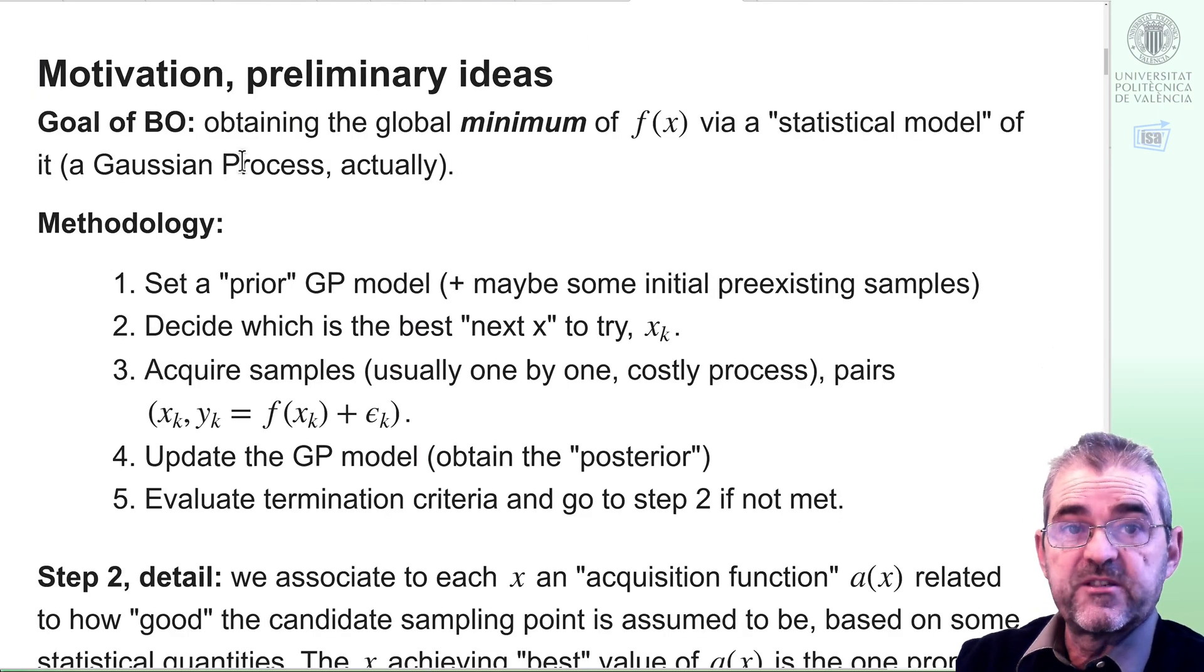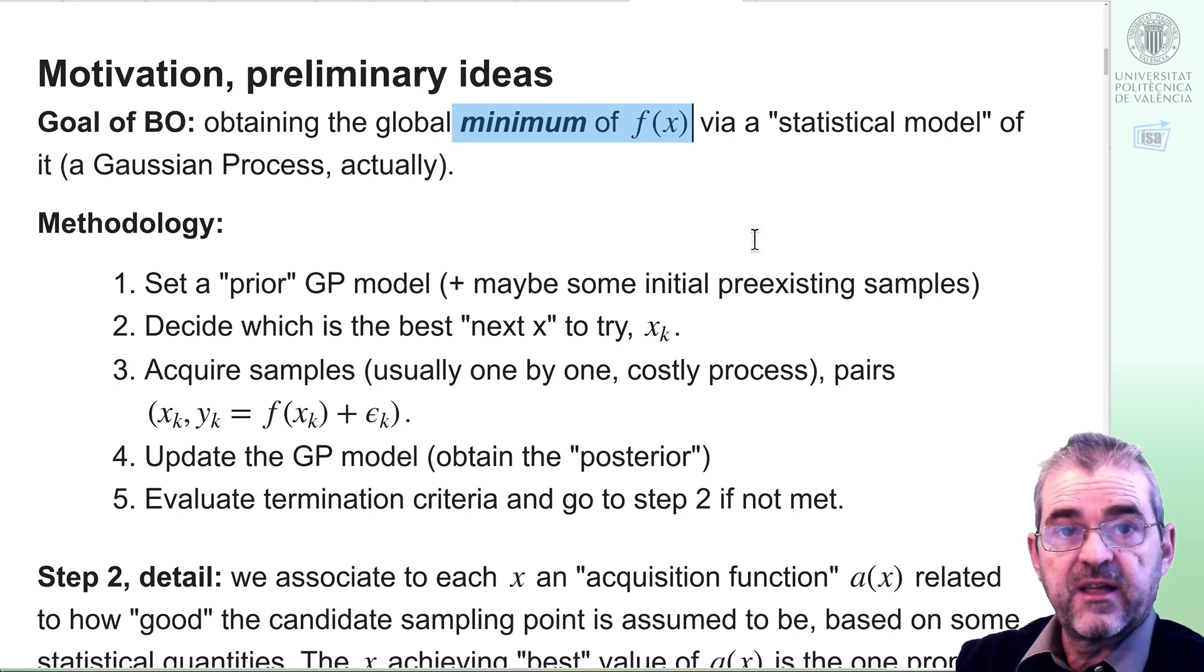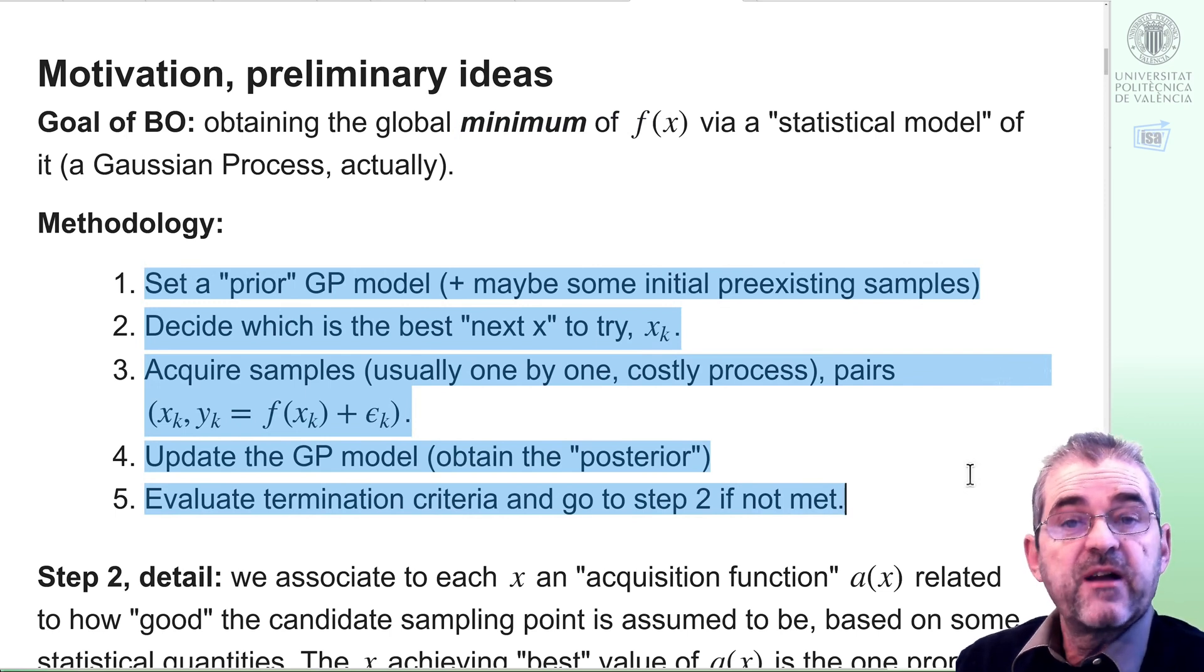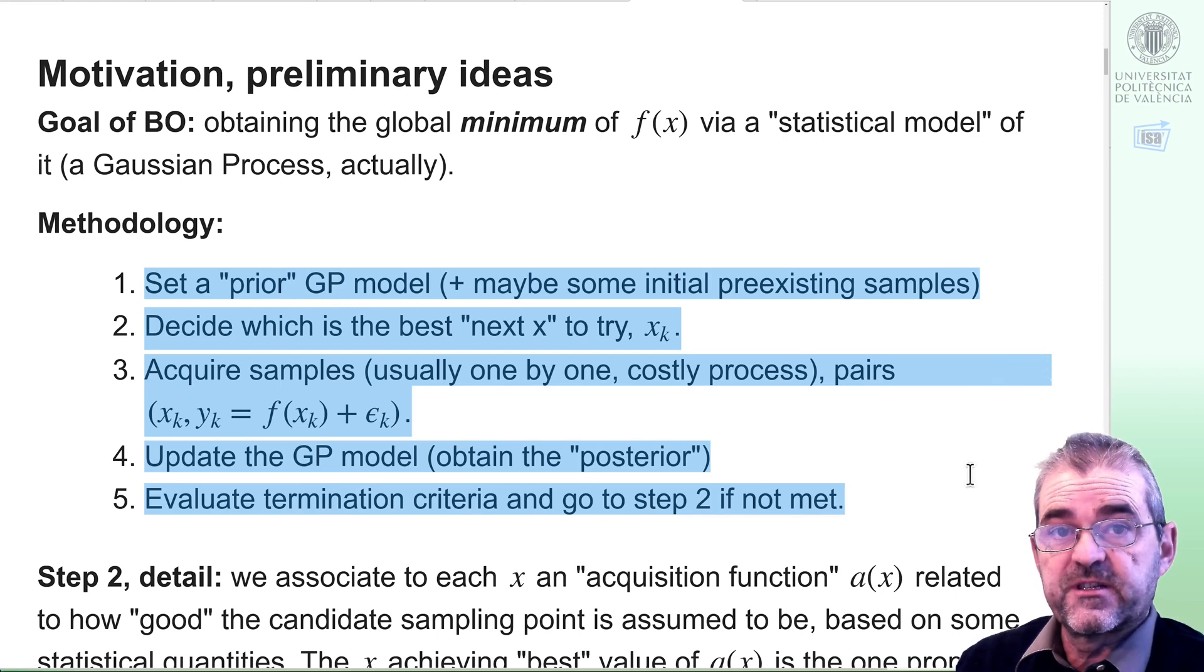So the goal of Bayesian optimization will be obtaining the minimum of a function f(x) via a statistical model of it. The function is unknown to the algorithm until we decide which points x to sample. The basic idea is setting a prior, acquiring some first samples and updating the prior, deciding which is the best next sample, acquiring, updating, and repeating until my sample budget exhausts.